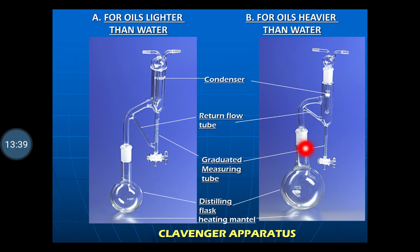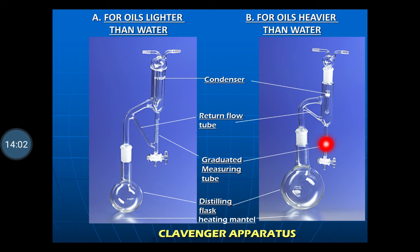For oils heavier than water, apparatus B is used — the process is the same, but since the volatile oil is heavier than water it sinks to the bottom of the graduated tube and the excess water passes through the return flow tube back into the round-bottom flask. Depending on whether the volatile oil in the crude drug has lower or higher density than water, you choose the appropriate apparatus — the principle is the same.